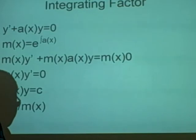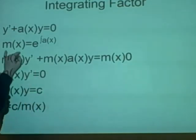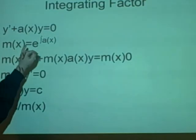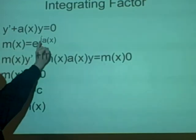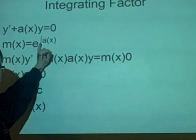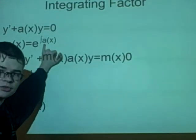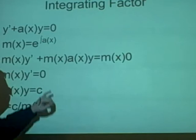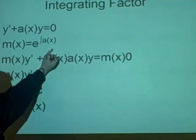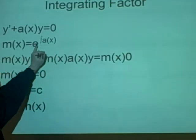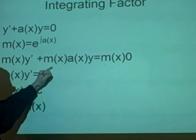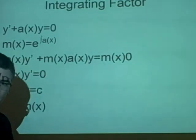First of all we're going to find the integrating factor and I've called the integrating factor m(x). And m(x) is equal to e to the power of the integral of a(x). So you integrate a(x) and e to the power of it. And this will give you the integrating factor.